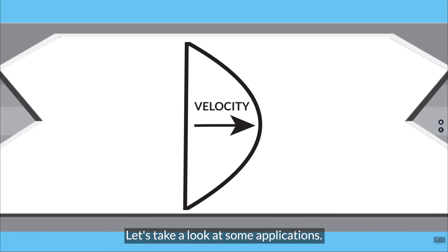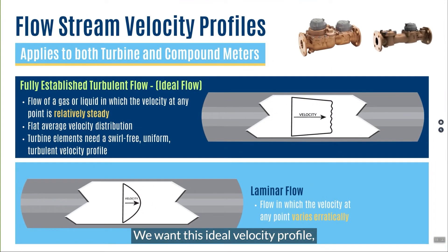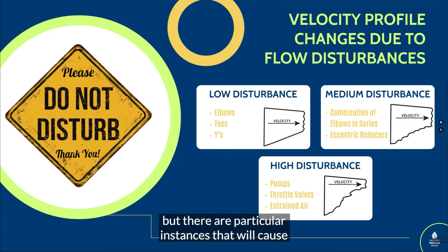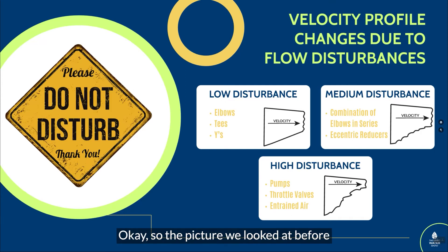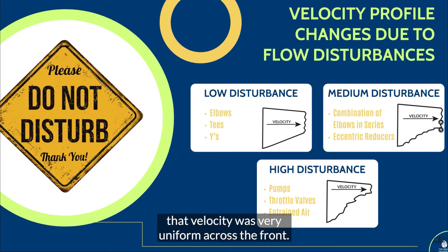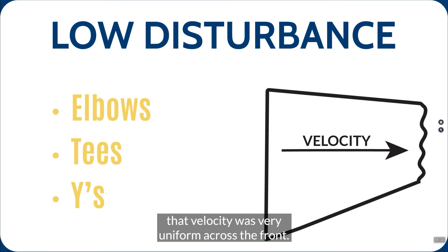Let's take a look at some applications. We want this ideal velocity profile, but there are particular instances that will cause a disturbance to that velocity profile. So the picture we looked at before, that velocity was very uniform across the front. In this case, this is what I would characterize as a low disturbance. Maybe an elbow or a T or a Y in front of the line could cause this skewing of the velocity profile.